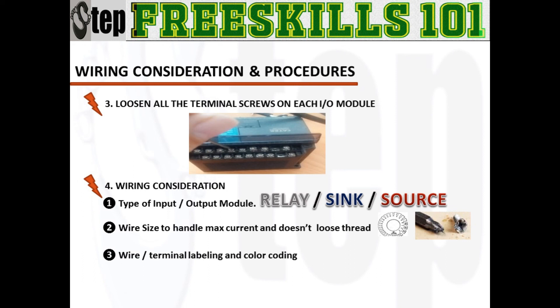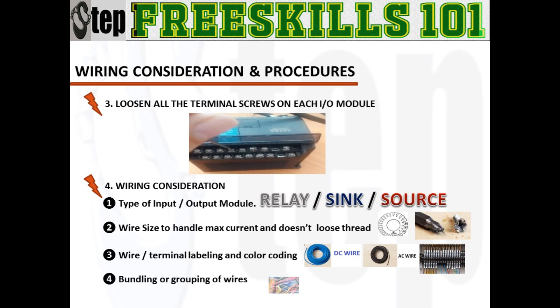Third, labeling of wires and termination, and using color coding, are important for identification especially during troubleshooting and tracing. It is best to use shrink tubing or tape. The wires that will be connected to a single module must be bundled, generally using a tie wrap, and then routed through the duct with other bundles of wire with the same signal characteristics. Input, power, and output bundles carrying the same type of signals should be kept in separate ducts when possible, to avoid interference.